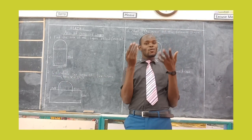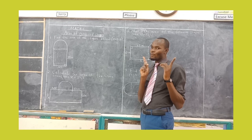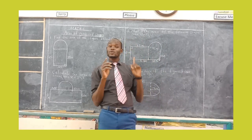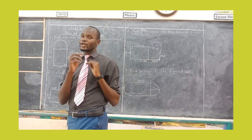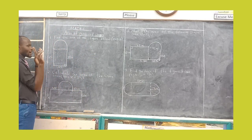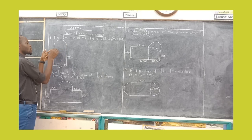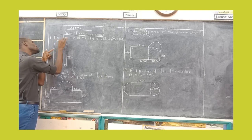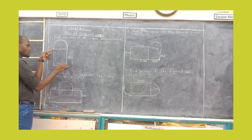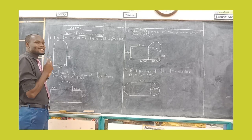Hello my fellow mathematician, welcome to this lesson where we are going to discuss more on area of combined shapes. Remember there is a difference between perimeter of combined shapes and area of combined shapes. In the case of perimeter, you get the half circumference and add the sides, like 25 plus 20 plus 25, going back to where you started. But in this case of area, it is different.